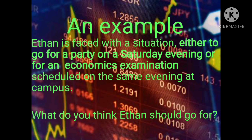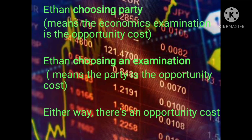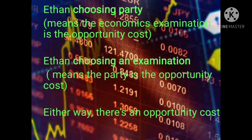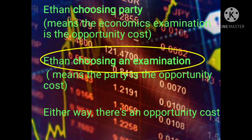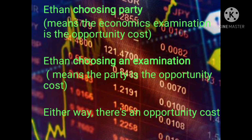Now let's look at the possible answers. If Ethan chooses the party, then the economics examination is the opportunity cost — because he is choosing to forgo the examination and go to the party with friends. On the other hand, if Ethan chooses the examination, then the party is the opportunity cost — because he is choosing to forgo the party and go for the economics examination. Either way, there is an opportunity cost. He is making a decision out of limited resources — in this case, time.